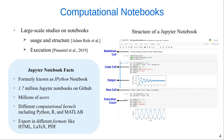Computational notebooks have gained widespread adoption among researchers from academia and industry as they support reproducible science. They allow users to combine code, text, and visualization for easy sharing of experiments and results. On the right side, we see the structure of a Jupyter notebook, which consists of different types of cells including markdown, raw, and code cells. The code cells can be executed and the result of the execution appears below the code cell.